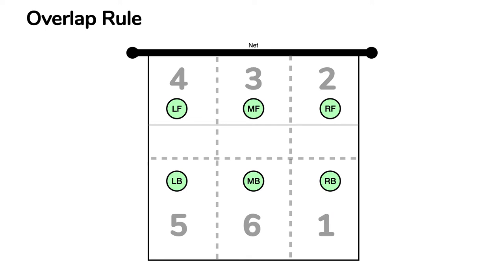We'll move on to other offenses later in the season. First things first, we're going to talk about the overlap rule. This applies before the ball has been served by our team or the other team. Once the server — whether it's the other team or our team — contacts the ball, we're allowed to switch positions. We're going to use this later when we talk about our offense, whether it's a 4-2, a 5-1, or a 6-2.